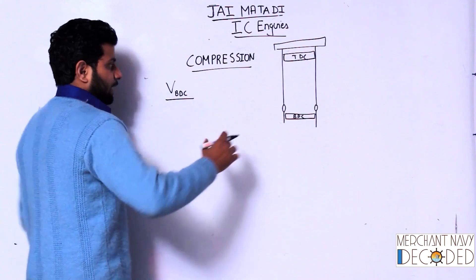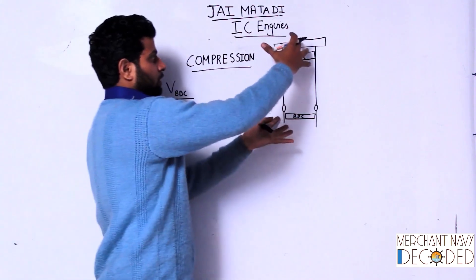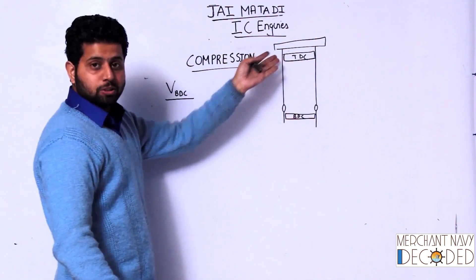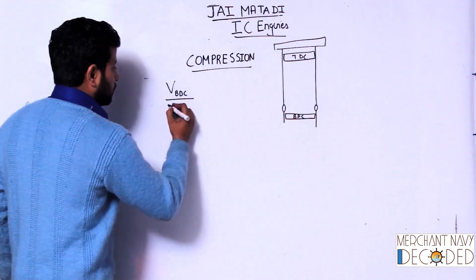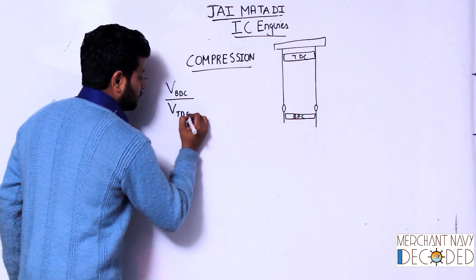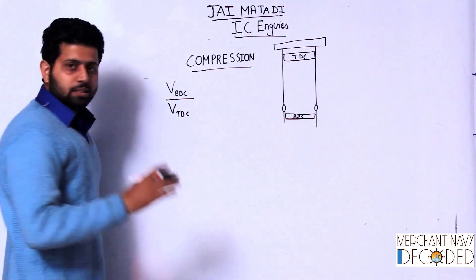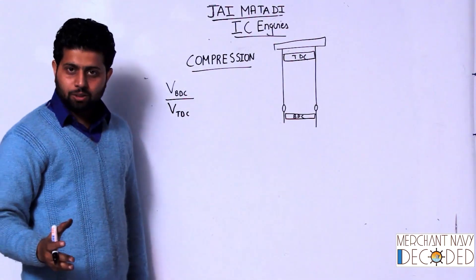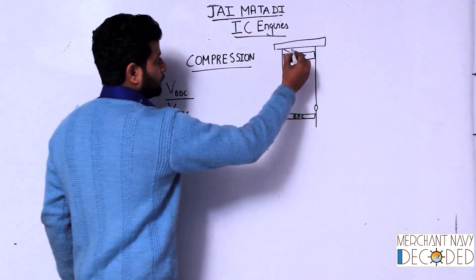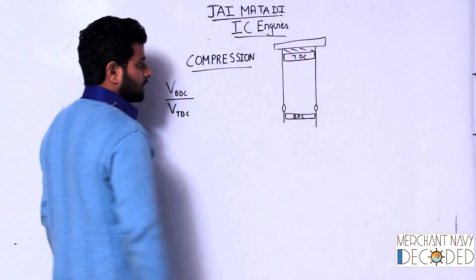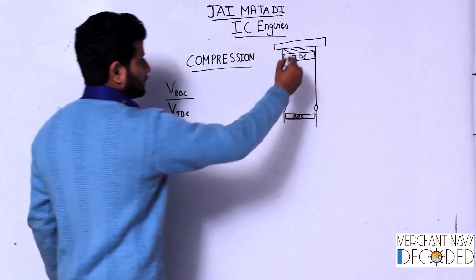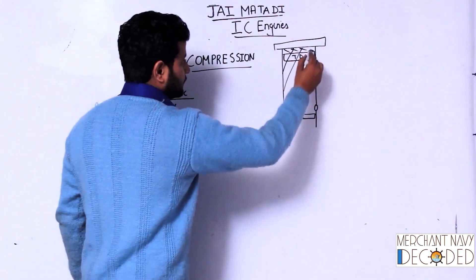Compression ratio is the volume at BDC divided by the volume at TDC. The volume was this much at BDC and it has been compressed to this much at TDC. So compression ratio = Volume at BDC / Volume at TDC.